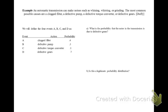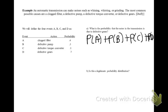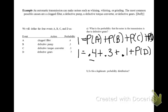An automatic transmission can make noises such as whining, whirring, or grinding. The most common possible causes are a clogged filter, a defective pump, a defective torque converter, or defective gears. We define the four events A, B, C, and D as in the table. What is the probability that the noise is due to defective gears? Using the rule that probabilities must sum to 1: P(A) + P(B) + P(C) + P(D) = 1. Plugging in the known values — 0.4, 0.3, and 0.1 — and solving gives P(D) = 0.2.